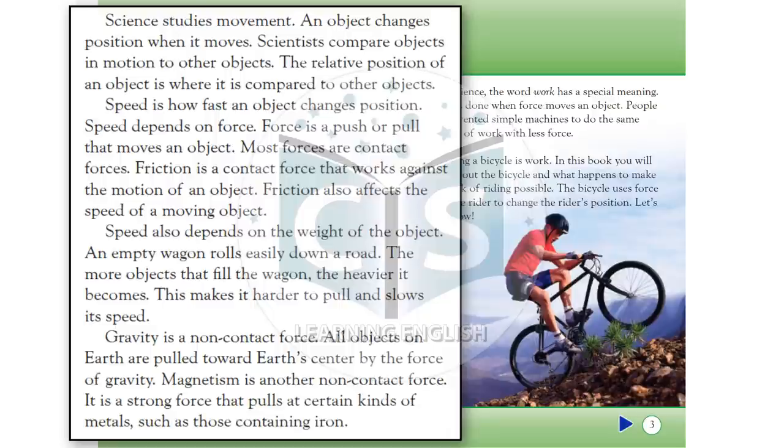Gravity is a non-contact force. All objects on Earth are pulled toward Earth's center by the force of gravity. Magnetism is another non-contact force. It is a strong force that pulls at certain kinds of metals, such as those containing iron.